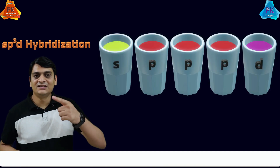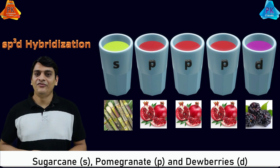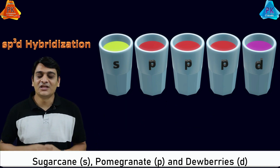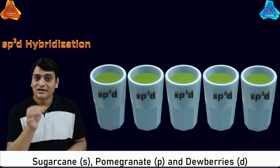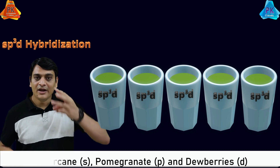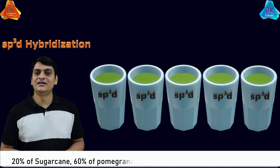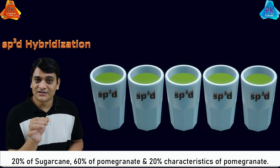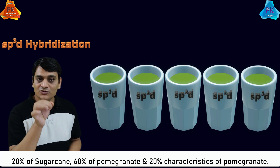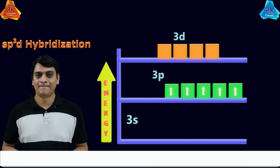This is similar to having one glass of sugarcane juice, three glasses of pomegranate juice, and one glass of dewberry juice — mix all five glasses together and redistribute. After redistribution you again get five glasses of juice, each containing the characteristics of sugarcane, pomegranate, and dewberry juice: 20% sugarcane, 60% pomegranate, and 20% dewberry. Similarly, sp3d hybridization takes place.